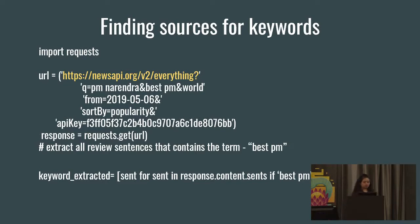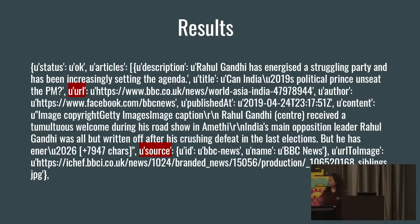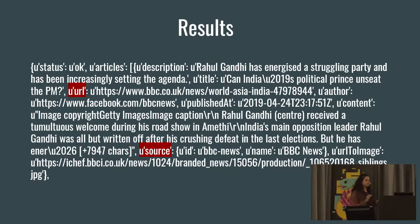To find out credible sources for those keywords, it's as easy as a request call using a credible news API — I was using Google News. You take the Google News API URL, put in your highest-ranked keywords, optionally add a date, and sort by popularity. Whatever responses you get come back with a URL and a source. If the message is credible, you would have a legitimate URL and a legitimate source.